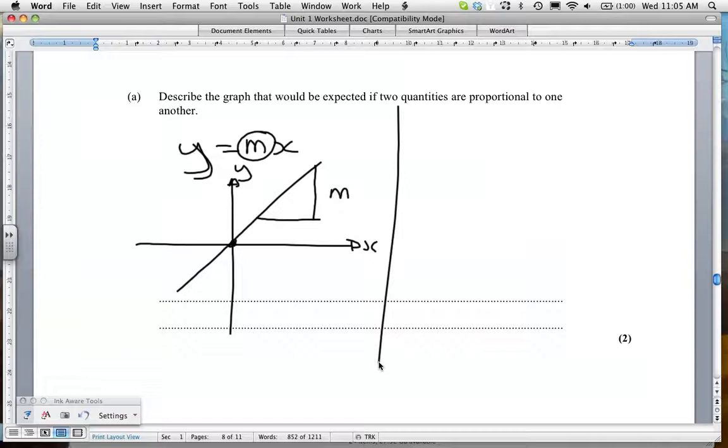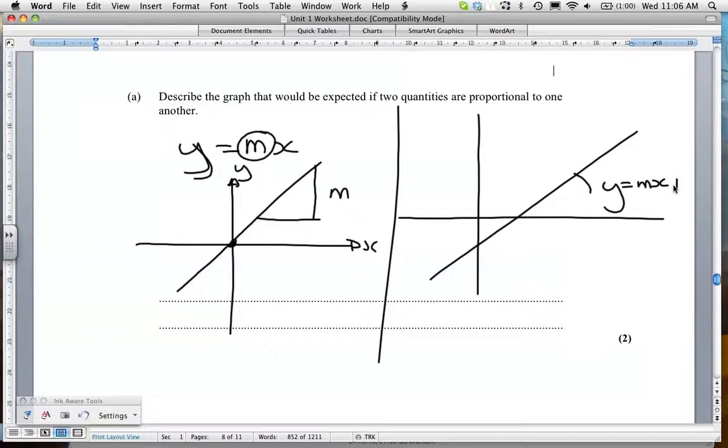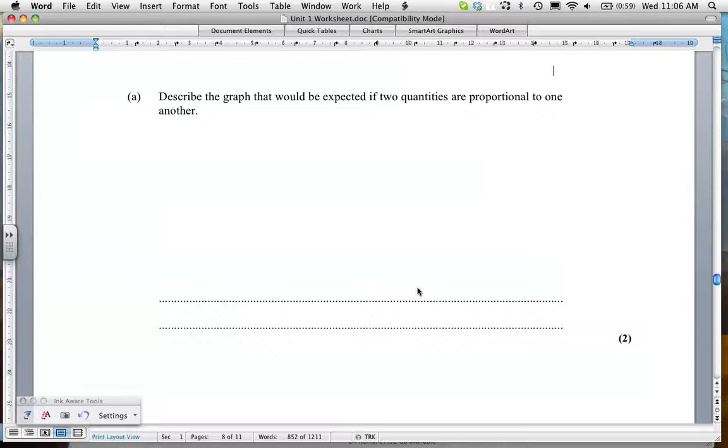That is a proportion graph. Now, you may have situations like Y equals MX plus B, where B is the Y-intercept. That is not a proportion graph. But often, we have situations where you have straight line graphs, and it could be because of some systematic error that it is not going through the zero axis, as we are going to see in this problem. So, describe the graph you would expect of two quantities proportional to one another. It would be a straight line, and it would go through the origin. Those would be the two points you would need to state.